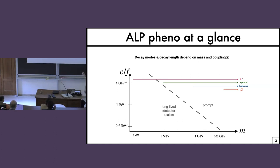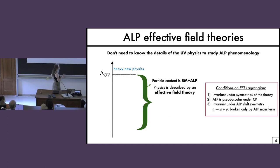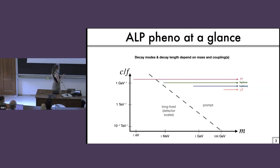If you're being completely agnostic about where this ALP comes from, then it can have a whole range of mass and a whole range of couplings, and it's going to have a lot of different phenomenology. In particular, it's going to decay in ways that depend mostly on its mass, but also a bit on its couplings. At any mass basically, it can decay into gamma gamma — it's just about how long its decay length is.